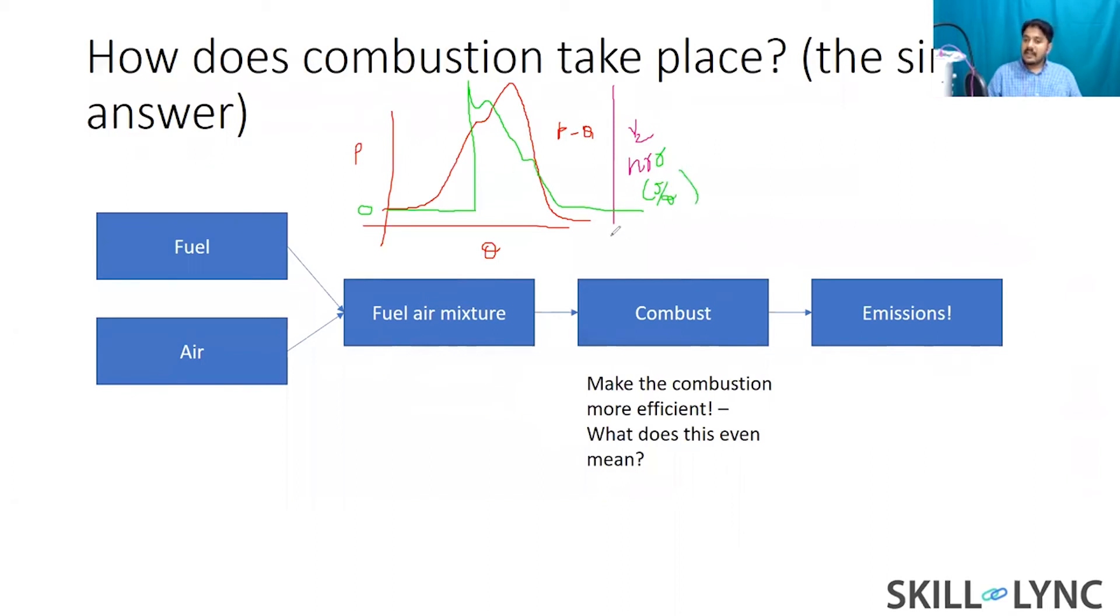The unit for heat release rate is joule per degree or joule per theta. What you can do is you can integrate this curve and calculate something called as IHR which is called as the integrated heat release rate, which basically says what is the total amount of heat that is being generated just from the combustion process.